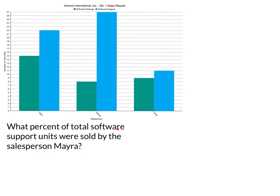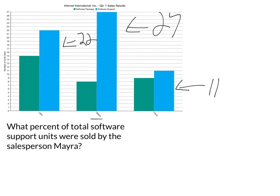So we're looking for total software support units sold by Myra. When thinking about total software support, we look at all three blue bars. This one looks like it's 11, this one is 27, and this one is 22. So we're going to add those up: 22, 27, and 11.